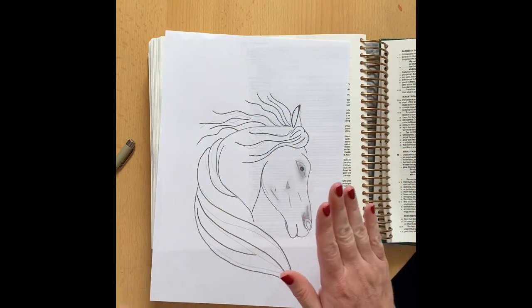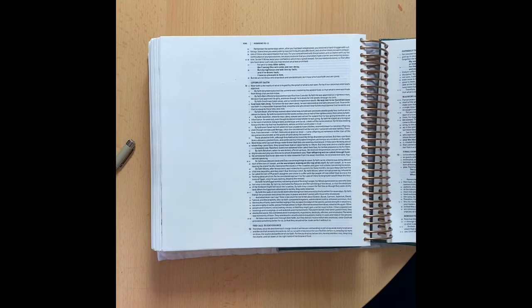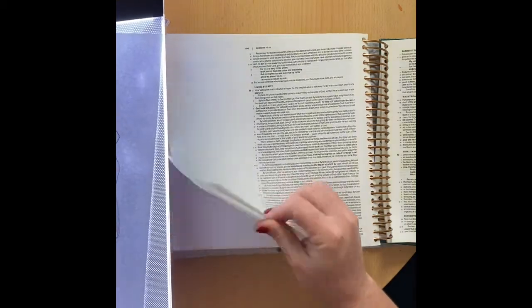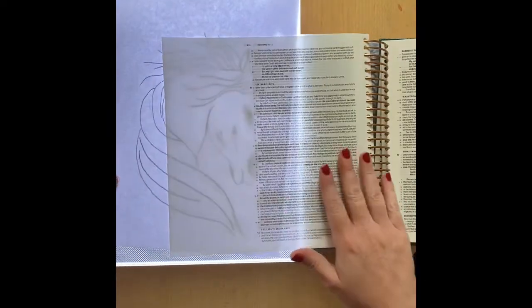Now the hair is going to be created by the string so what we're going to first need to do is trace the horse's head into the Bible.